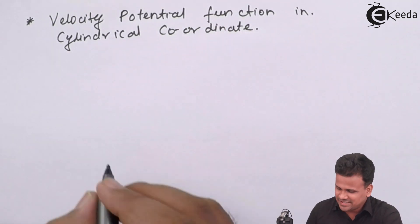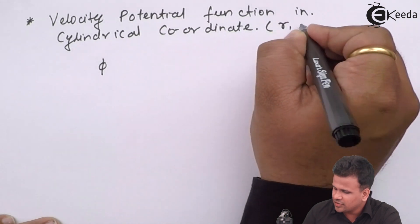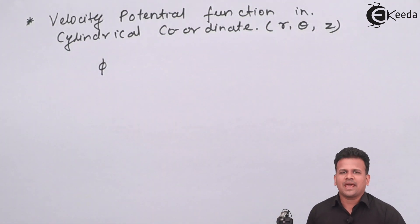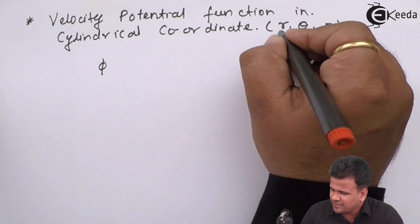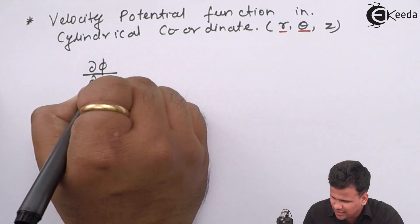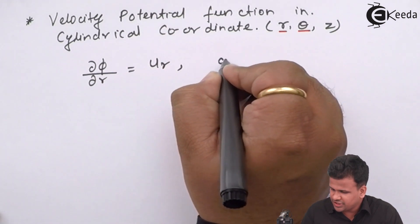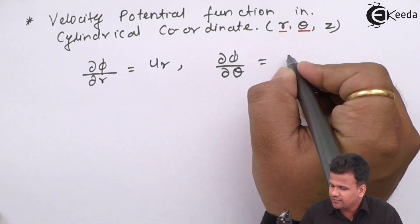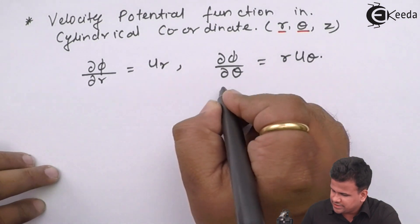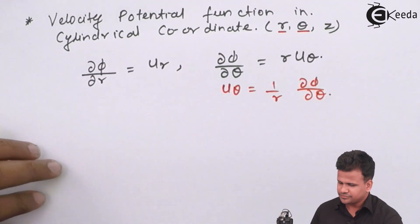Velocity potential function is given as phi. In cylindrical coordinates — that is r, theta, z — we calculate the velocity potential function. In fluid mechanics, we study velocity potential function for r as well as theta. If you differentiate d-phi by d-r, it gives you the value u_r. Similarly, if you differentiate d-phi by d-theta, it gives a value of r times u_theta. So this can also be written as u_theta equals 1 upon r times d-phi by d-theta.